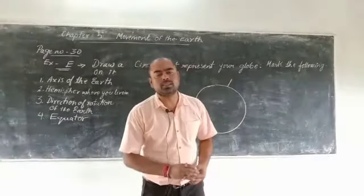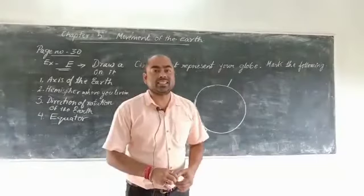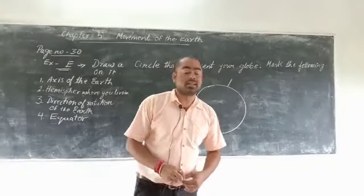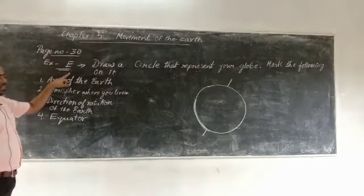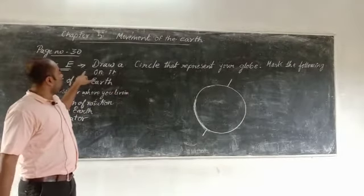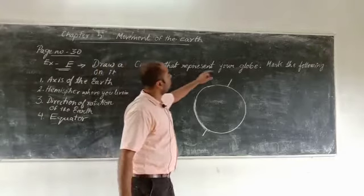Hello students, welcome to the class. Today we are here with the exercise of Chapter 5, the last exercise. You can get it on page number 30, Exercise E. So the exercise is: draw a circle that represents your globe.